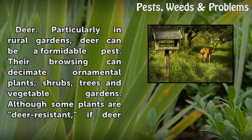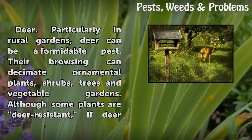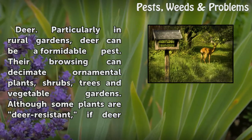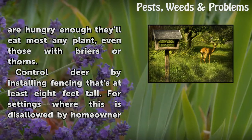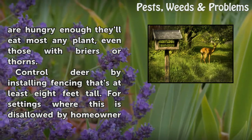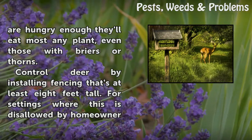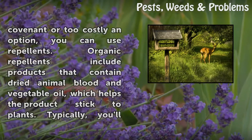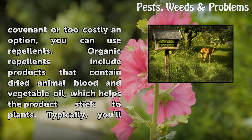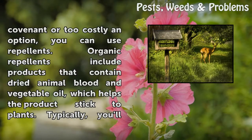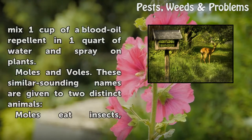Deer: particularly in rural gardens, deer can be a formidable pest. Their browsing can decimate ornamental plants, shrubs, trees, and vegetable gardens. Although some plants are deer-resistant, if deer are hungry enough they'll eat almost anything, even plants with briars or thorns. Control deer by installing fencing at least eight feet tall. Where fencing is disallowed by homeowner covenant or too costly, use repellents — organic repellents include products containing dried animal blood and vegetable oil, typically mixed as one cup per one quart of water and sprayed on plants.